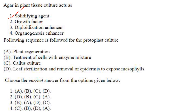The following sequence is observed for protoplast culture: first is leaf sterilization and removal of epidermis to expose the mesophyll cells (D), then treatment of cells with the enzyme mixture — cellulase, hemicellulase and pectinase — to remove the cell wall, then callus culture (C), and finally plant regeneration (A). So the order is D, B, C, A — answer is option 2.